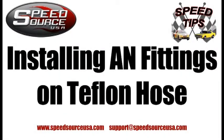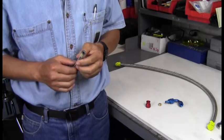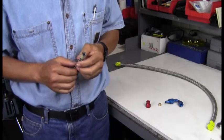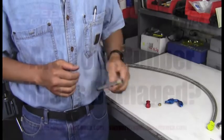Today we're going to demonstrate how to put Phoenix Industries end fittings on braided Teflon hose. Current fuels have chemicals which quickly deteriorate rubber hoses. Teflon will last much longer than rubber.